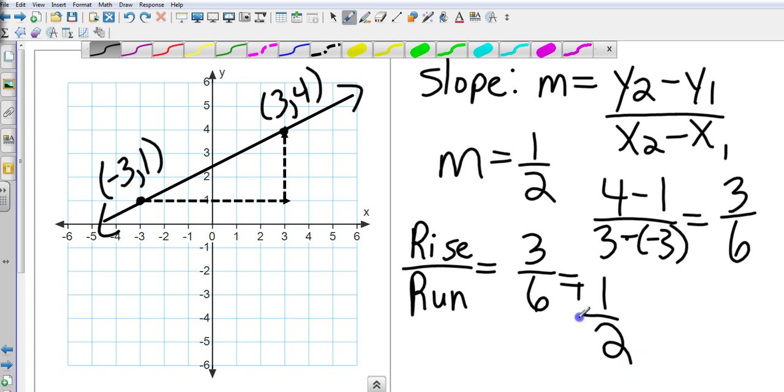And you'll notice that I get 3 sixths, which is 1 half. Exact same answer. Two different methods. So a little over 10 minutes, and that is all. Chapter 3, Section 3, Slopes of Lines.